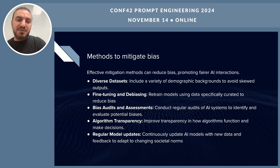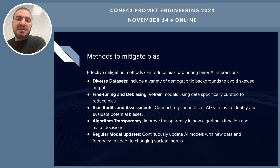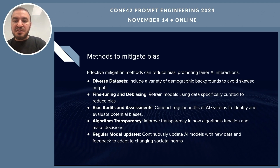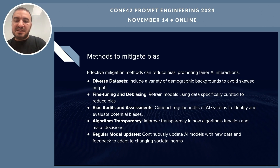Let's look at methods to mitigate bias. Using diverse training datasets that cover a range of demographics is the starting point. For example, if you are building an AI assistant to answer medical questions, you should use a dataset that reflects diverse patient demographics and conditions to avoid biased recommendations. Another method is fine-tuning and debiasing, where we retrain the model with specific data to help reduce bias. Conducting bias audits and maintaining transparency about how algorithms function are also important. Finally, updating models regularly and keeping them aligned with social norms helps minimize bias.